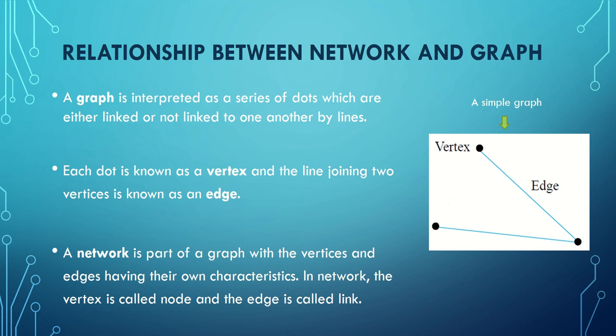First, we have to know the relationship between network and graph. A graph is interpreted as a series of dots which are either linked or not linked to one another by lines. Each dot is known as a vertex and the line joining two vertices is known as an edge. A network is part of a graph with vertices and edges having their own characteristics. In a network, the vertex is called a node and the edge is called a link, but the terms we use here are vertex and edge.